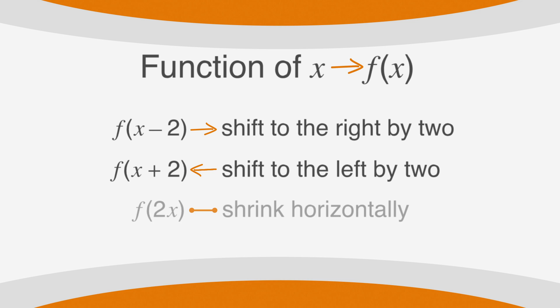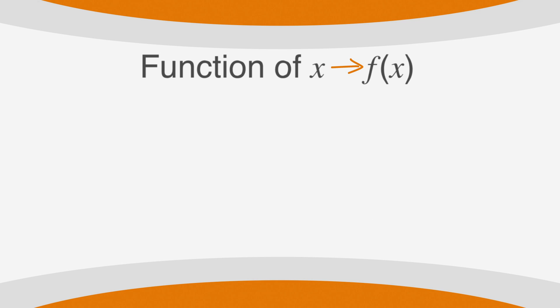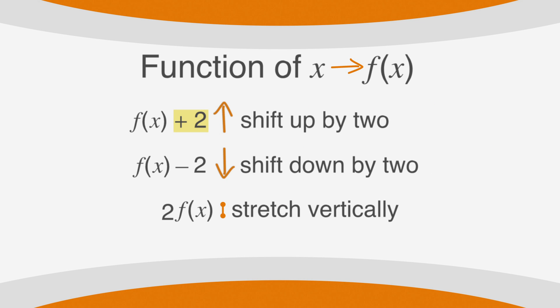And multiplying the x's by 2 has the effect of shrinking the function horizontally. The changes outside of the parentheses affect the y values and shift the function vertically. Notice that these changes affect the function in the way we would expect.